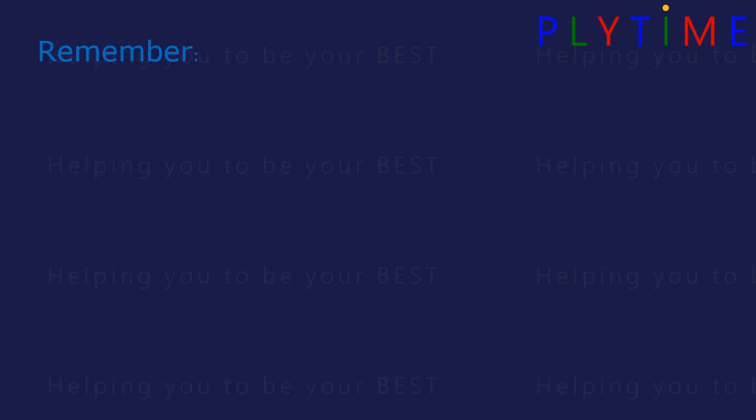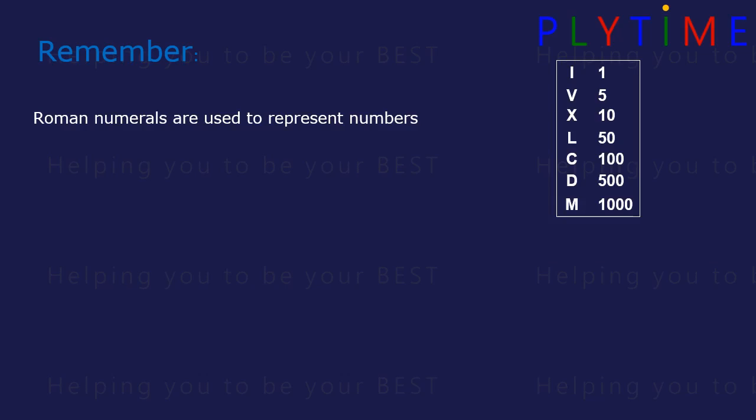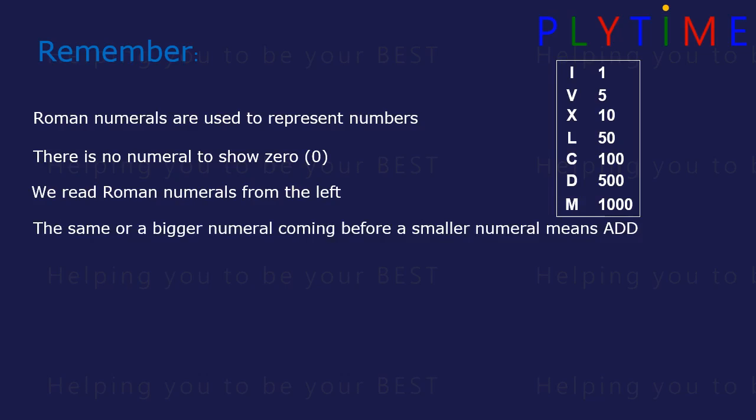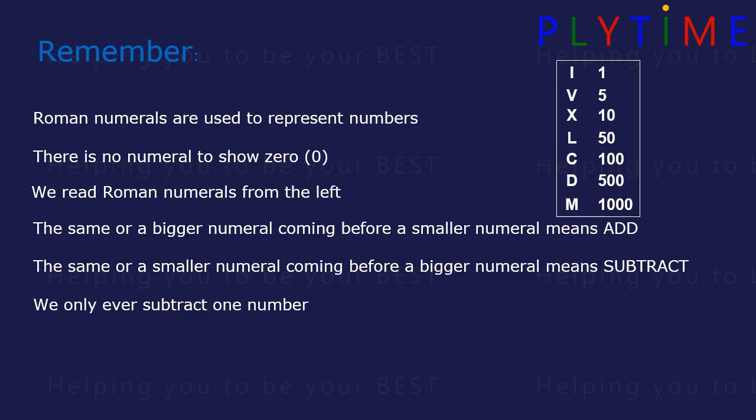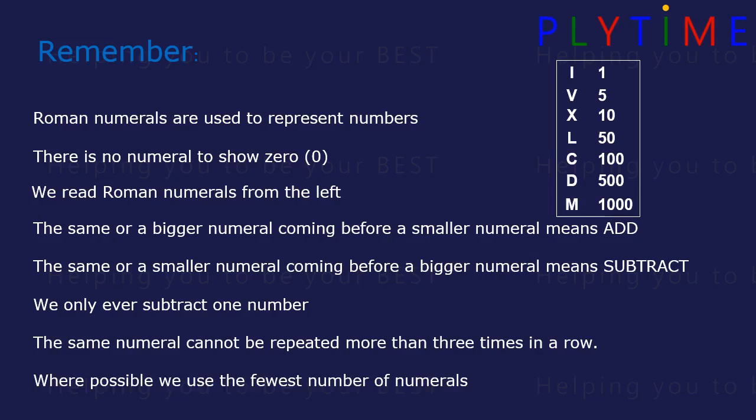Remember, Roman numerals are used to represent numbers. There's no numeral to show zero. We read Roman numerals from the left. The same or a bigger numeral coming before a smaller numeral means add. A smaller numeral coming before a bigger numeral means subtract. We only ever subtract one number. The same numeral can't be repeated more than three times in a row. Where possible, we use the fewest number of numerals.